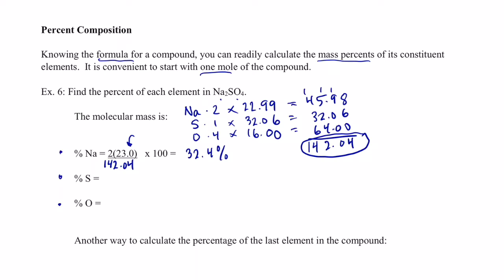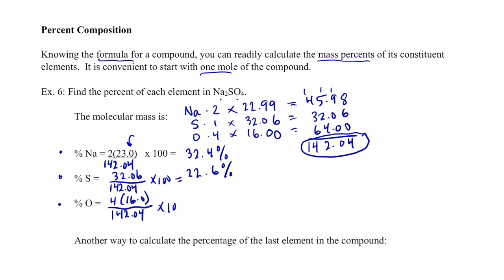Let's find the percentage of sulfur the same way. We take 32.06 divided by the mass of the compound, 142.04, times 100. That gives us 22.6% — to three significant figures. Then for oxygen: four oxygens at 16.00 grams per mole each, divided by 142.04, times 100, gives us 45.1%.